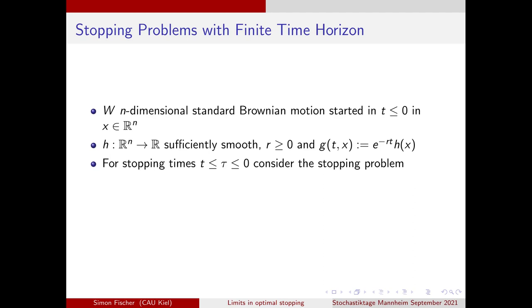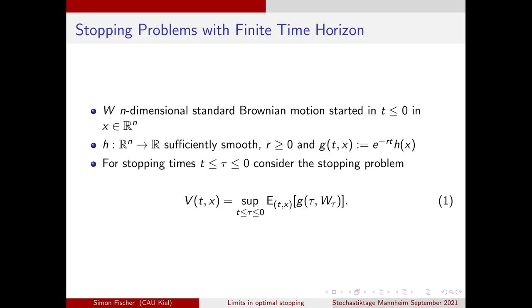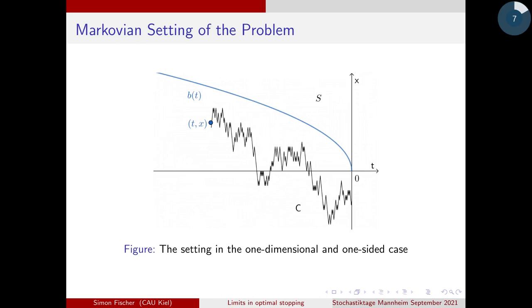We optimize over stopping times lying between t and zero. In the general Markovian form, the stopping problem reads that the value function v is the supremum over the expectation of our gain function g, plugging in the standard Brownian motion. Since we're in a Markovian setting, we divide the space into a continuation set C and a stopping set S. An optimal stopping time is the first entry into S, or stopping at the finite time horizon zero.